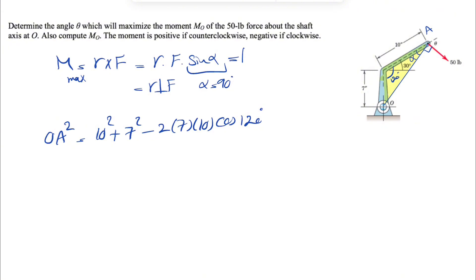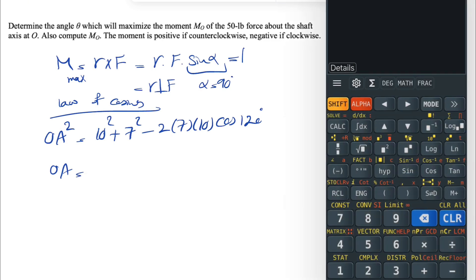Again, this is based on the law of cosines. So our OA would be the square root of what we have in the previous equation: square root of 10 squared plus 7 squared minus 2 times 7 times 10 times cosine of 120. That's going to give us 14.8 inches.